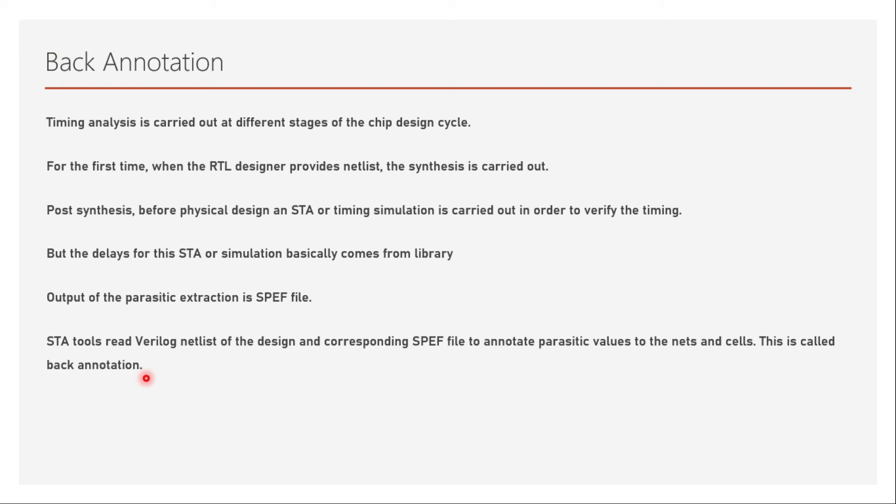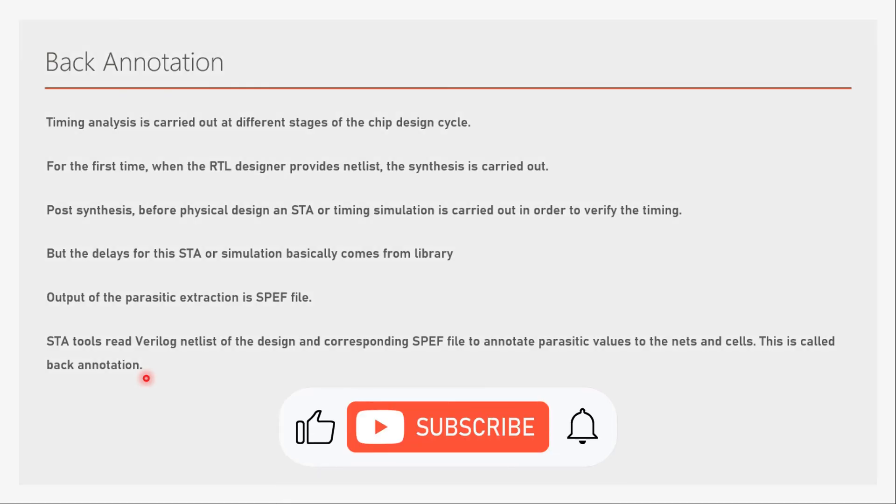The output of parasitic extraction is the SPEF file, which contains resistance and capacitance values for devices and nets. Since we now have accurate values after extraction, we want to incorporate them into STA. The STA tool reads the Verilog netlist and the corresponding SPEF file to annotate parasitic values to the nets and cells. This process is called back annotation — because values were initially estimated by the tool, and once proper extraction is done, we back-annotate with accurate values.